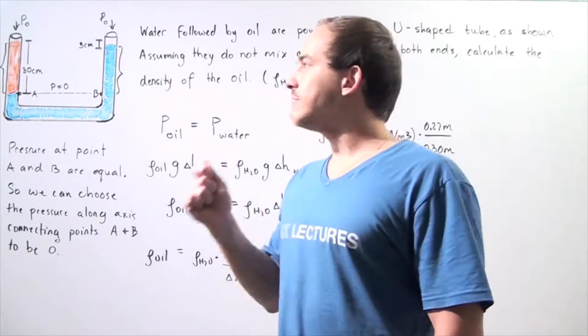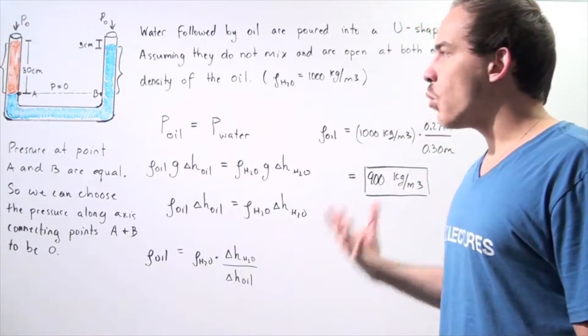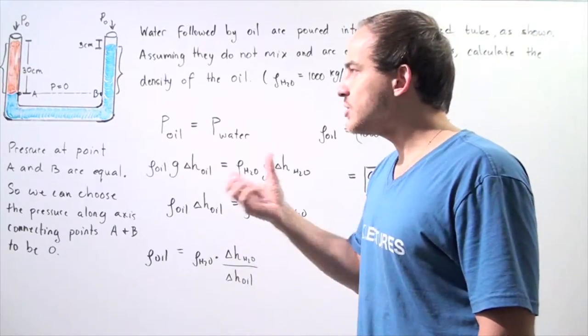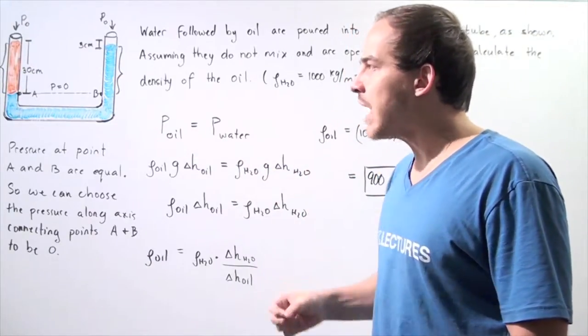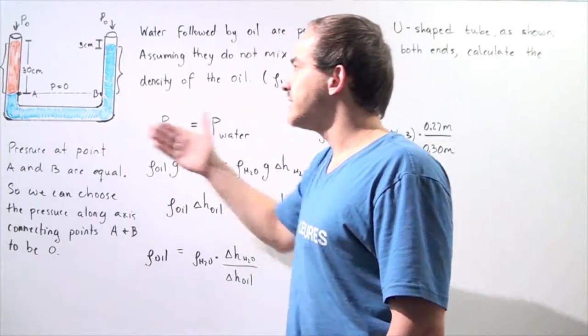Let's suppose we have the following experimental setup. First we take water and pour it into our container, then followed by that we pour oil. So we have a U-shaped container.